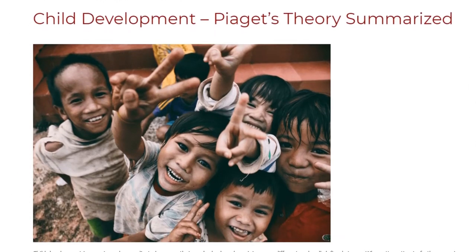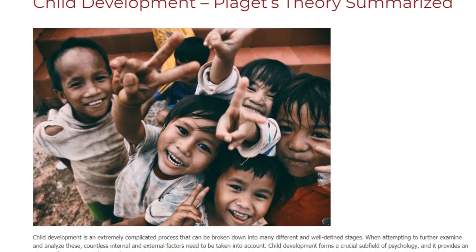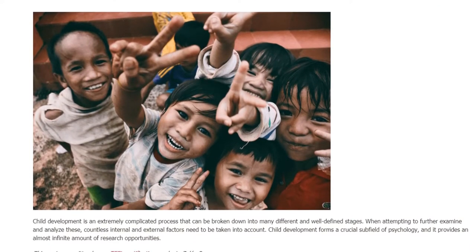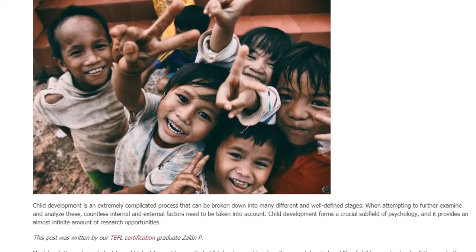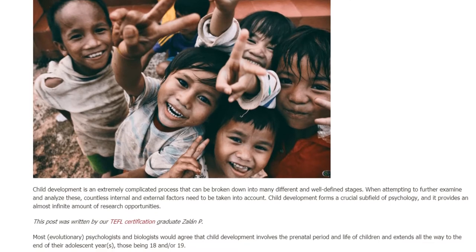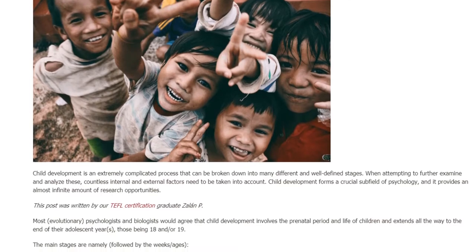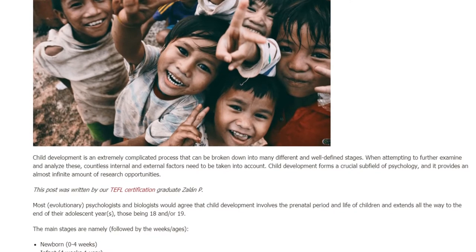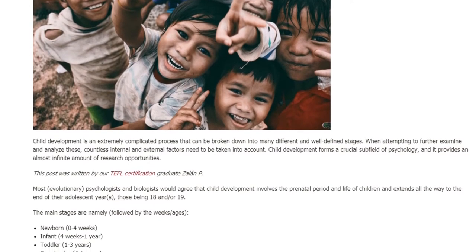Child development is an extremely complicated process that can be broken down into many different and well-defined stages. When attempting to further examine and analyze these, countless internal and external factors need to be taken into account. Child development forms a crucial subfield of psychology, and it provides an almost infinite amount of research opportunities. Most psychologists and biologists would agree that child development involves the prenatal period and extends all the way to the end of adolescent years, those being 18 and/or 19.